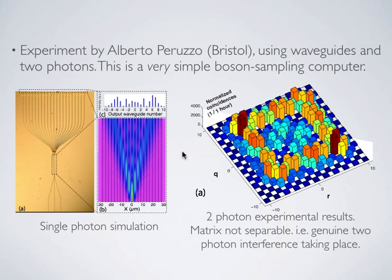Let's look at the two-photon experiment in more detail. This was done by Alberto Peruzzo in Bristol using waveguides and two photons, with one photon injected at each of two inputs. To characterise the output, you do coincidence measurements to know the coincidence probabilities for all combinations of where the photons could arrive, represented as a coincidence matrix: one axis for the first photon's position, the other for the second, with joint probabilities in between. This matrix is not separable — it cannot be expressed as a product of independent functions on each axis — which is a signature of entanglement. With three photons this becomes a 3D matrix, four photons a 4D matrix, and so on: the complexity of characterization grows exponentially with photon number.